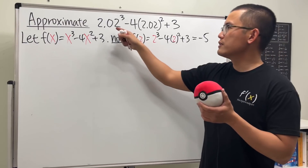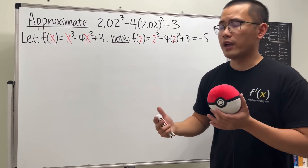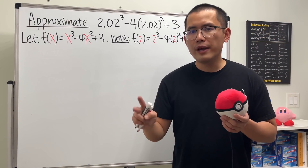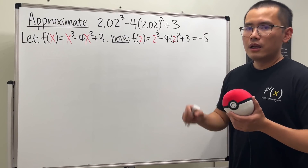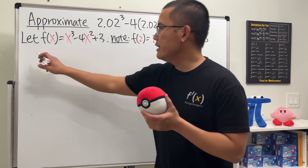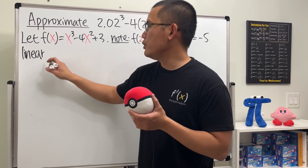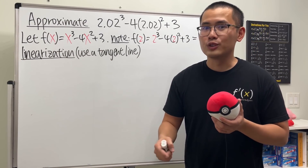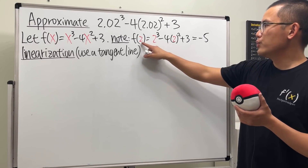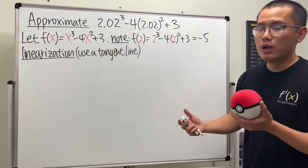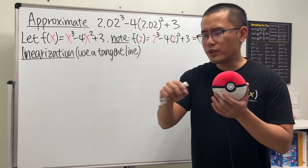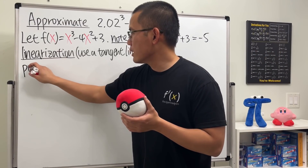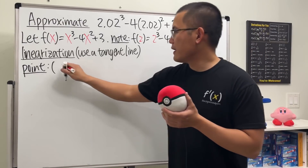Since 2 and 2.02 aren't far apart, f(2) = -5 is already a decent approximation — but we can do better. The first method is called linearization, which is a fancy way of saying we'll use a tangent line. For a line we need a point and a slope. The point we know is (2, -5).